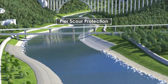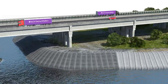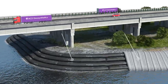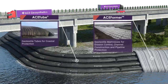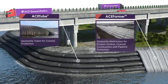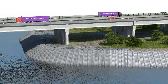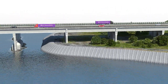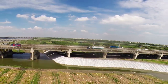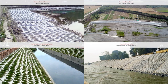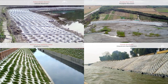Pier Scour Protection: Combining ACE-TEX tube geotextile tube and ACE-TEX Formr geotextile mattress forms a durable protection system that is highly effective against scouring of underwater structures. Because of its ability to conform to the structure and adapt to different geo-features, it greatly improves the anti-scouring ability and the durability of the entire system.